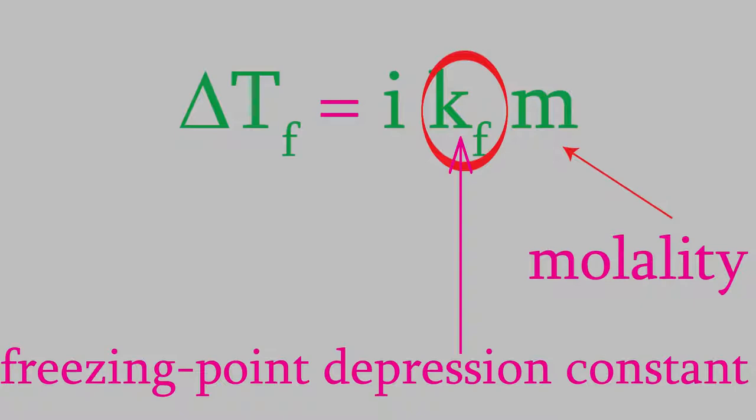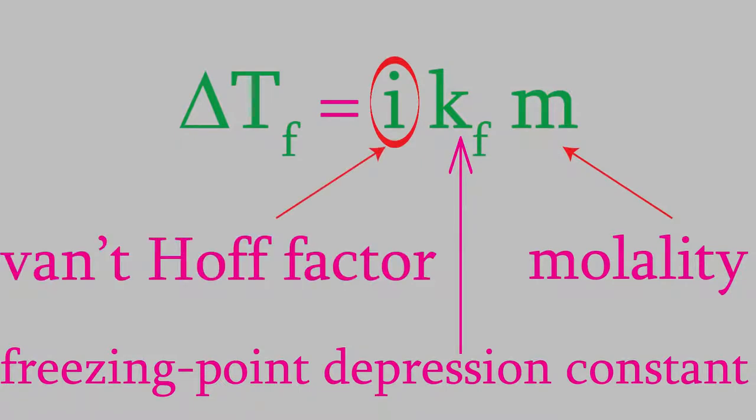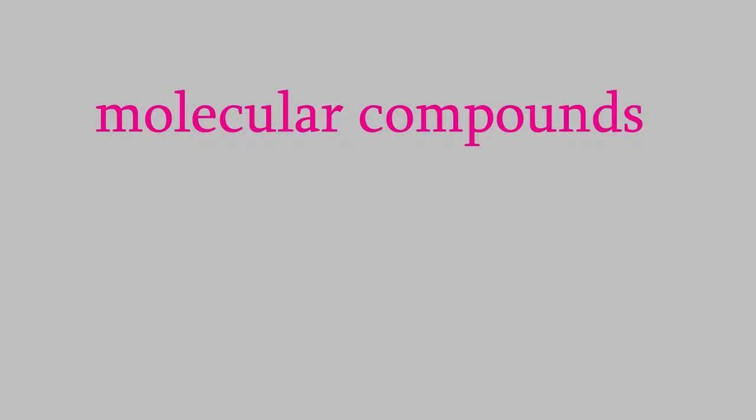The last thing in the equation is I, which is called the van't Hoff factor. This one takes a second to explain. As you learned in the General Chemistry I course, there are two types of compound: molecular compounds and ionic compounds. When they dissolve, these behave a little differently.